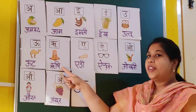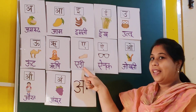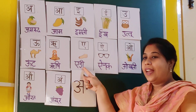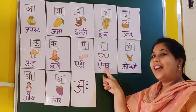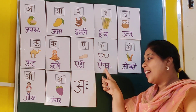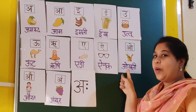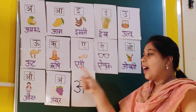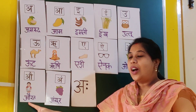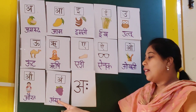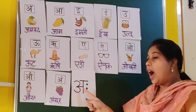Ri se rishi baba, A se edi, A se ainak, O se okhli, A se aurat, aah se angul.